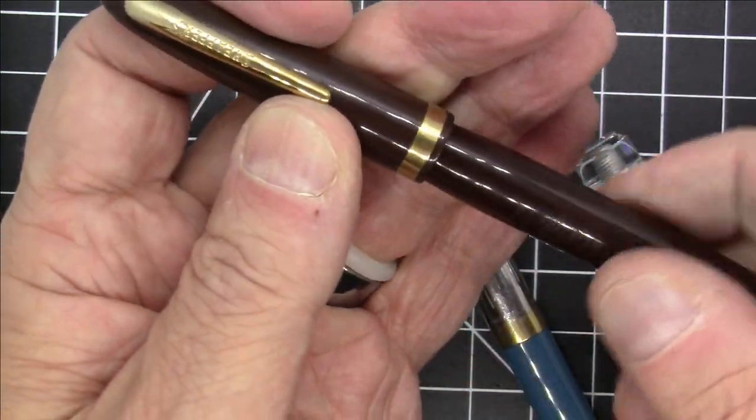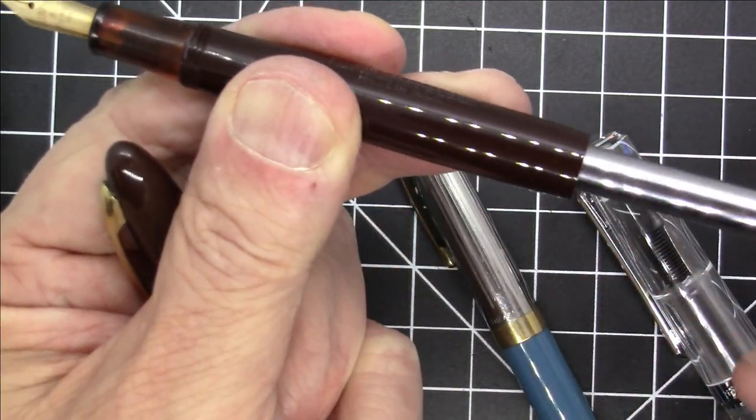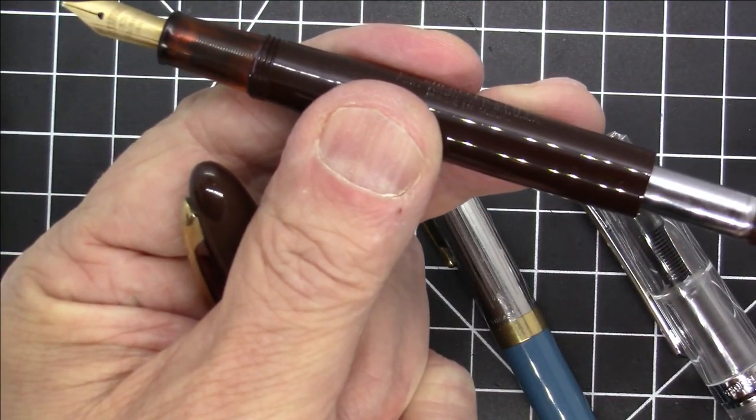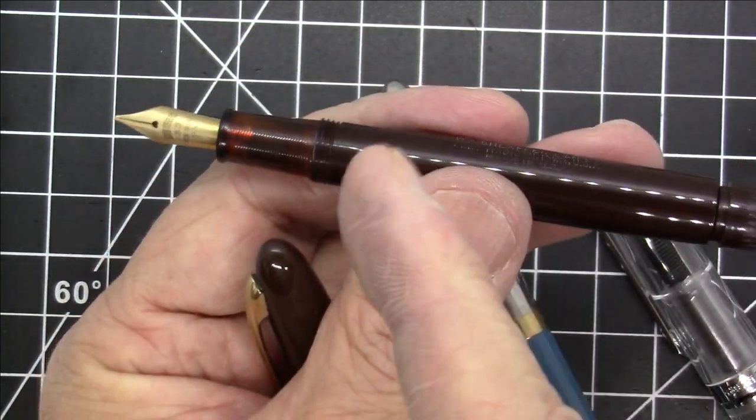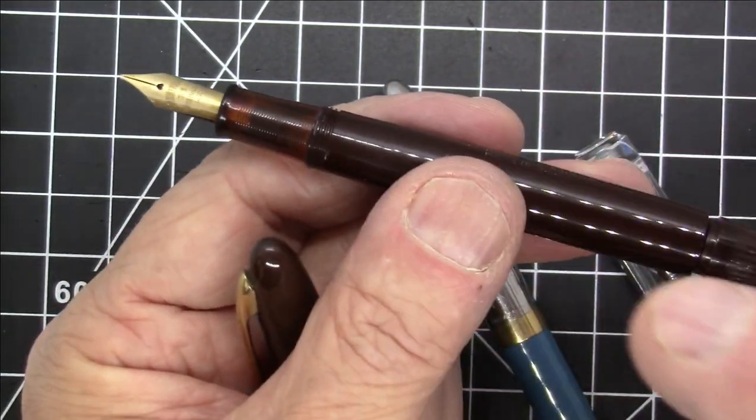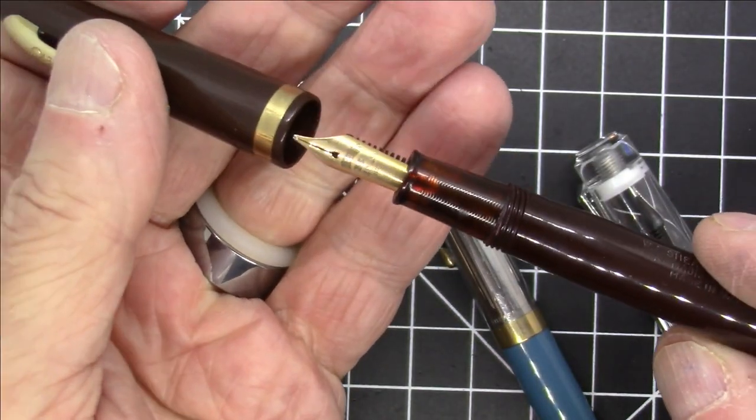For example, here is a Sheaffer touchdown filler from back in the day that worked pretty much exactly the same way. You unscrew this, you pull out the sleeve, you push it in. There's a sack that's getting compressed and at the end of the downstroke, the vacuum releases and will allow the pen to fill. So this is a normal fountain pen from Sheaffer that was a touchdown filler.